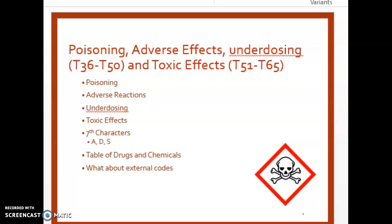A poisoning is when a substance involved is not used according to a physician's instructions — maybe an overdose, the patient took a wrong dose, or the patient took the prescription not as instructed, such as taking Valium with alcohol when the prescription specifically says not to mix that medication with alcohol. Even if the patient took the correct dosage of the Valium, if taken with alcohol that's not as instructed. When coding a poisoning, we code the poisoning first, then an additional code for the manifestation of the poisoning, like a coma or vomiting.